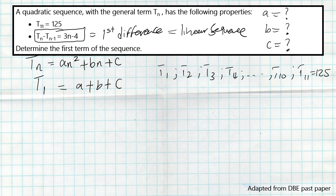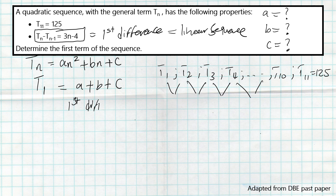Remember, in a quadratic sequence we have the first difference and the second difference — the second difference is called the common difference because it must be the same. Since we have the formula for the first difference, we can actually substitute values of n to get those first differences. For the first difference: substituting n=1, 2, 3, 4 gives us 3(1)−4 = −1, 3(2)−4 = 2, 3(3)−4 = 5, 3(4)−4 = 8.